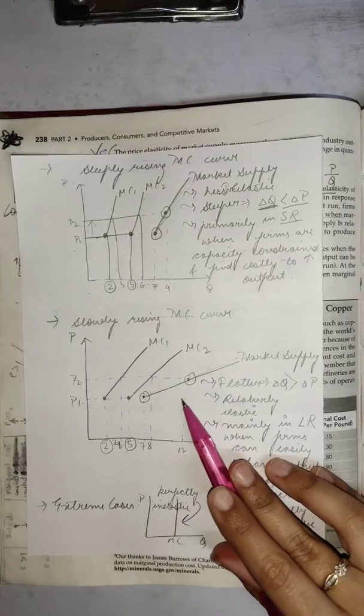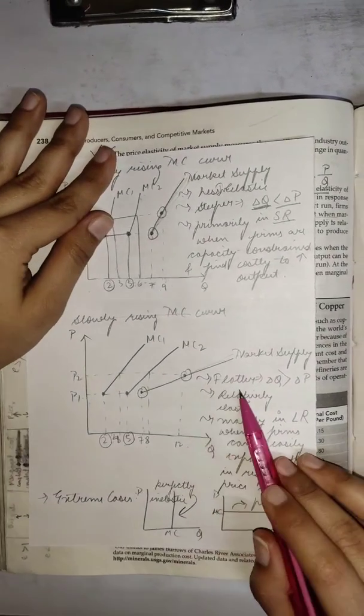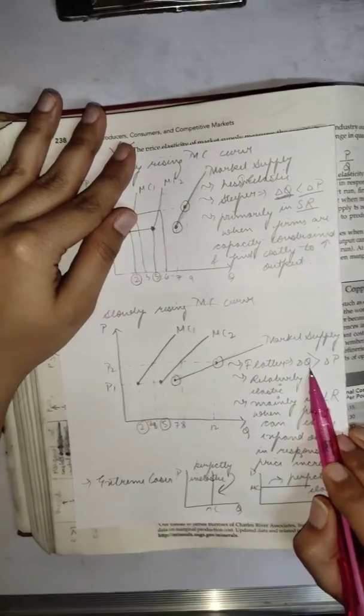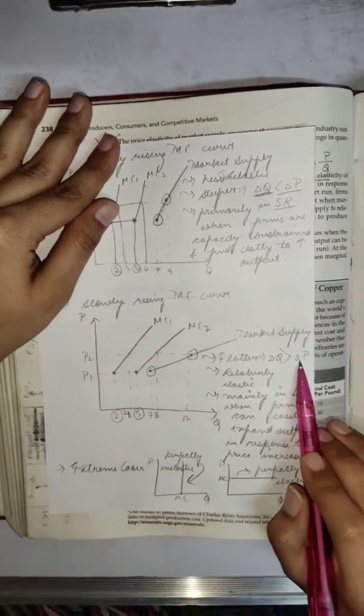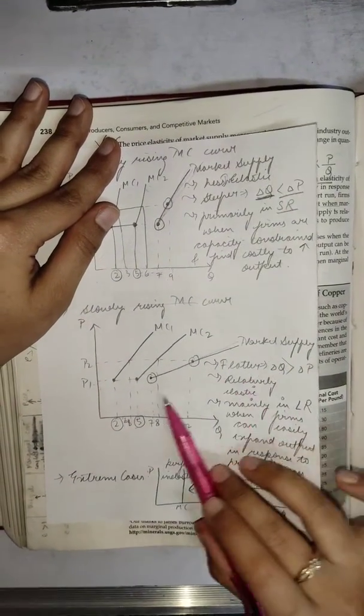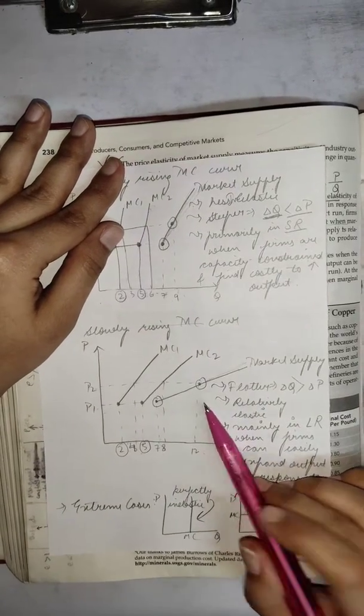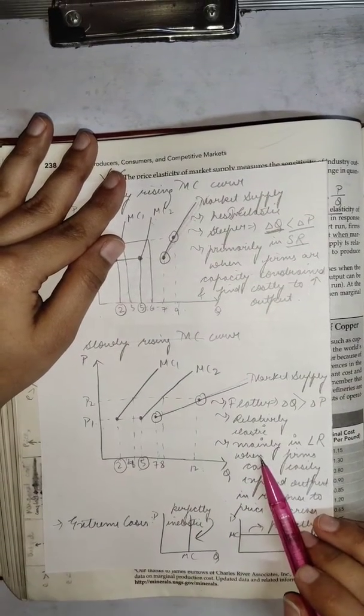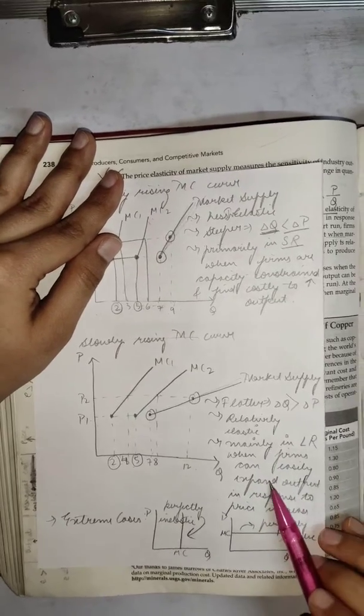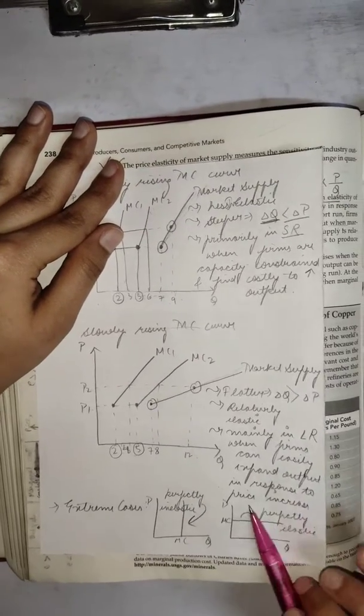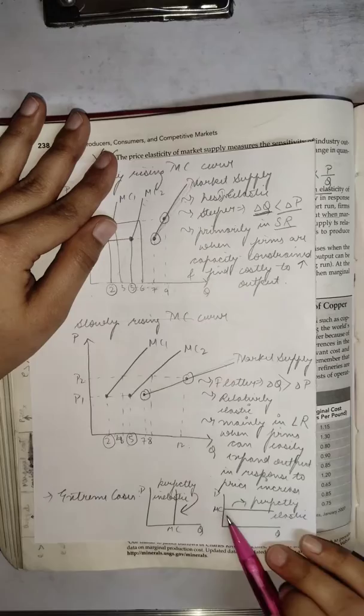However, this scenario where my market supply curve is indeed flatter or I should say percentage change in quantity is greater than the percentage change in price. That is, this is relatively elastic is a scenario primarily in the long run. This happens mainly in the long run when the firms can easily expand output in response to price increase.